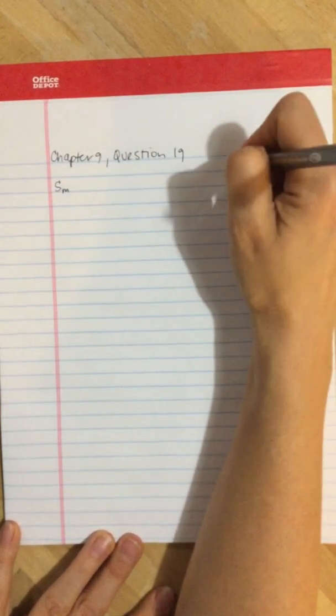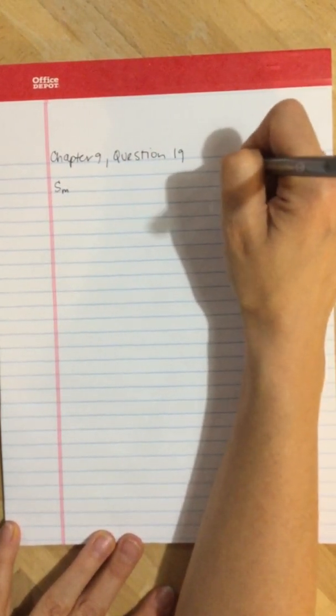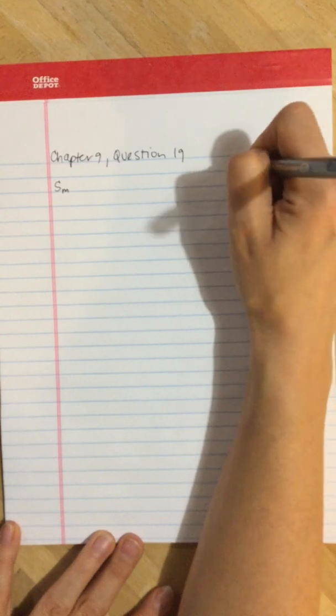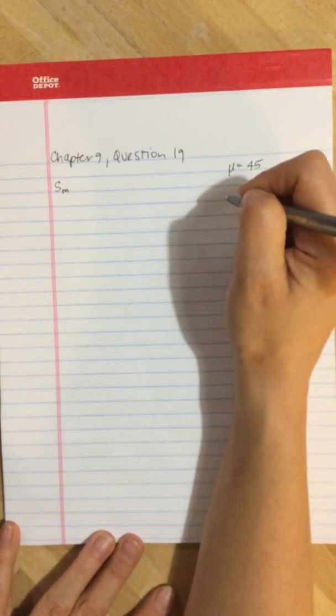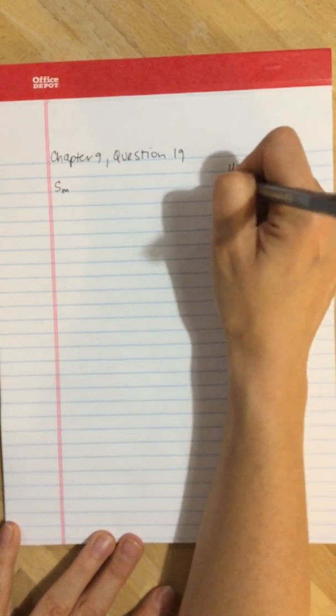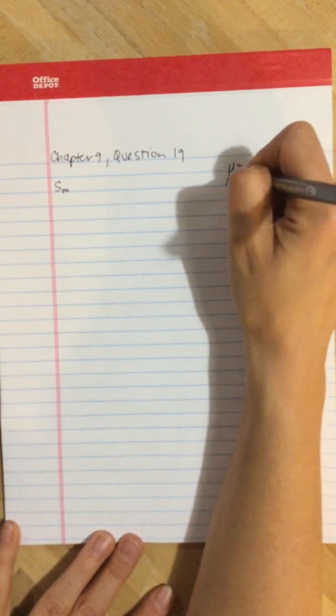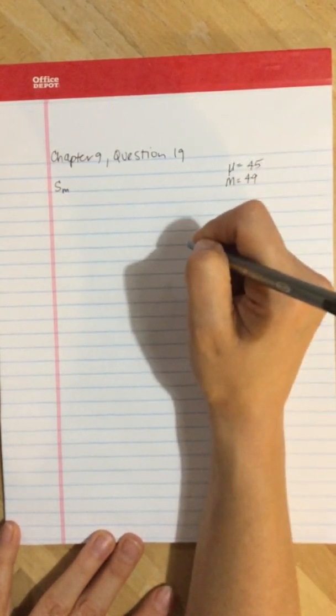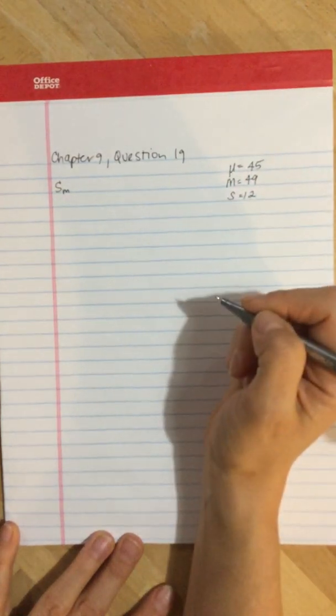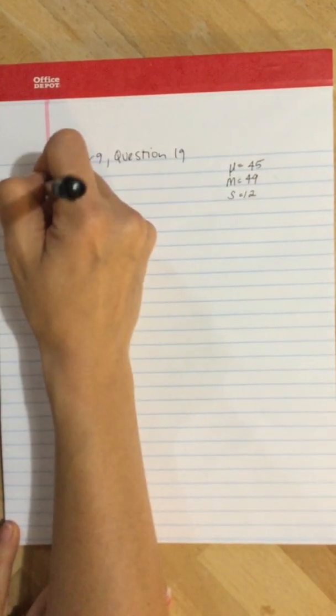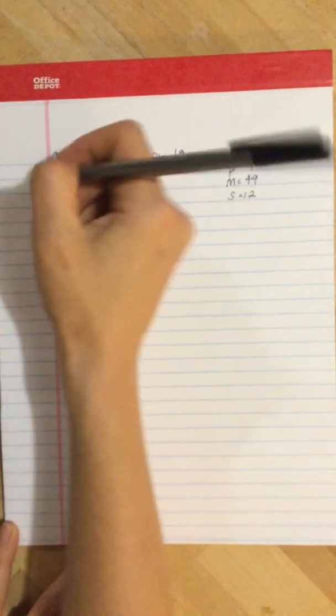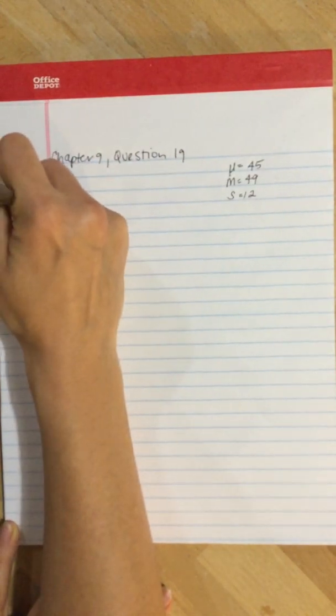The first step should actually be to pull out those values from the question. The population value was 45, the mean after treatment was 49, and the standard deviation was 12. What changes from A to B is the number of scores in the sample. For part A, n = 9.